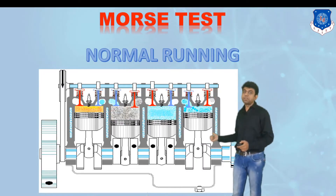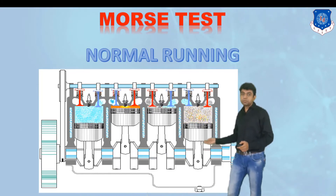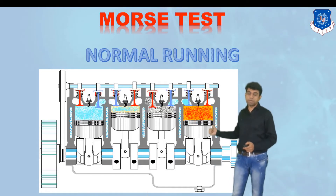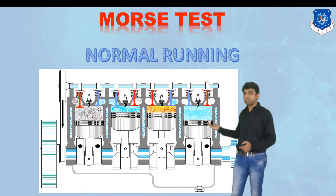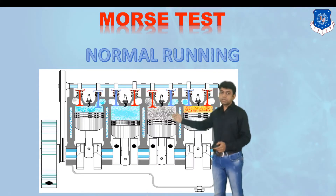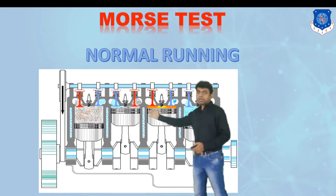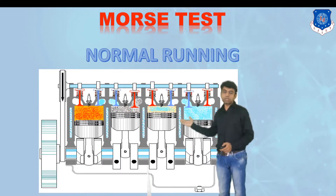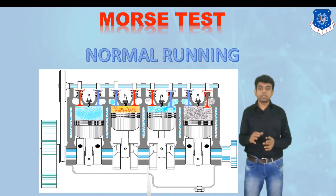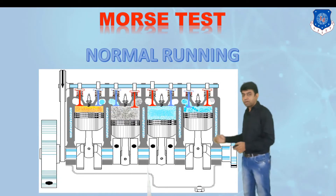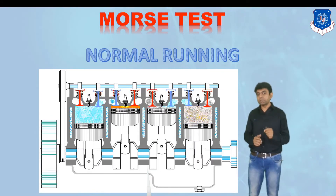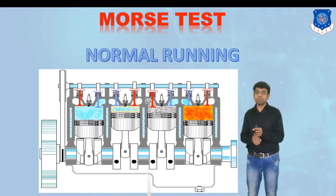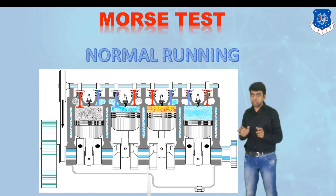Even though we cut off the fuel supply of one cylinder, the piston in that cylinder is still reciprocating due to the power available from the other cylinders. Therefore, friction power loss is still applicable in all four cylinders. Similarly, when cylinder two's fuel injection is cut off while one, three, and four remain active, cylinder two's piston still reciprocates and friction power remains applicable in all four cylinders.